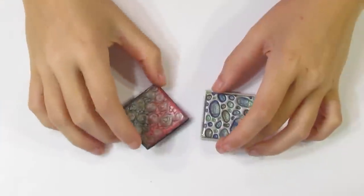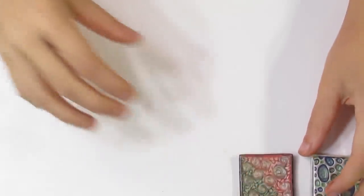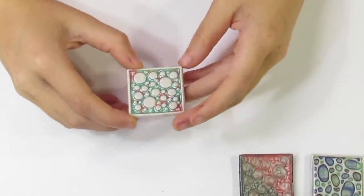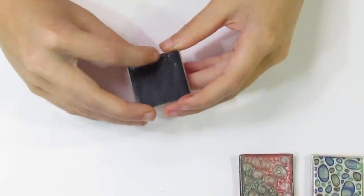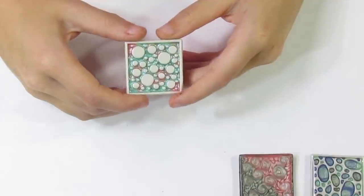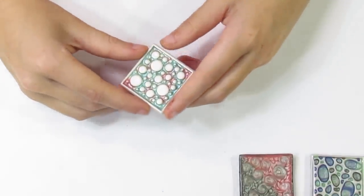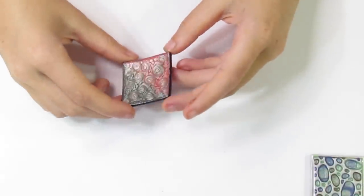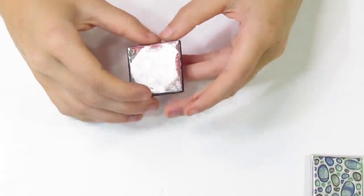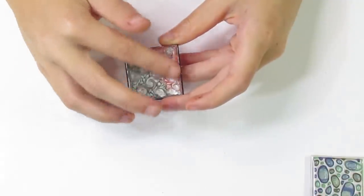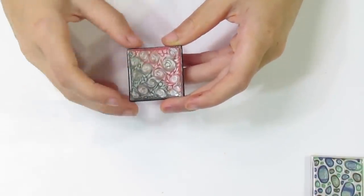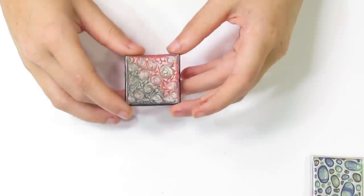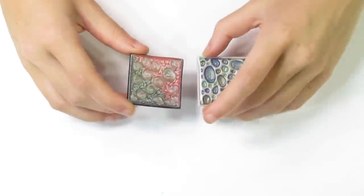Okay and then another thing that I found is that the Pebeo paints don't cure to a rock hard finish on the polymer clay. So they are safe. I've done a bit of testing and they haven't reacted with the polymer clay and I know that a lot of you guys have been using the Pebeo paints and you guys haven't had trouble. So it's safe for polymer clay but it doesn't cure into a rock hard finish. So you do want to do something that is going to protect it.